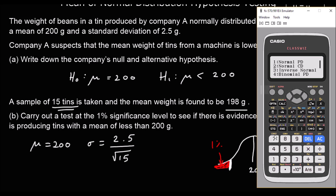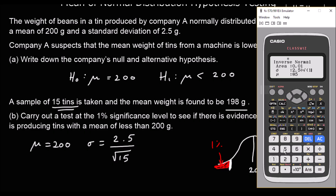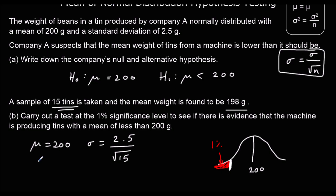We'll grab the calculator. Menu 7, we're going to use the inverse normal function. We're going to take an area of 1%, so that's 0.01. Our standard deviation is 2.5 over square root 15, and the mean is 200. That gives us a critical value of 198.5.